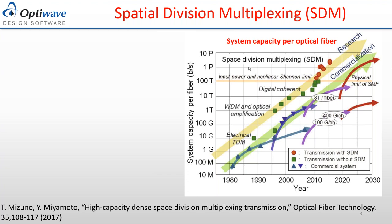We're going to talk about system capacity per optical fiber. From this 2017 reference, we can see the trend between 1980 and the expected outlook to 2030 in system capacity per fiber. In the early ages between the 80s and 90s, electrical time division multiplexing was mainly used. The green arrow shows industry implementation while the yellowish arrow shows research progress. In 1990, when EDFA and optical amplifier WDM were invented, the industry moved to 10, 40, and 100 gigabit per second.